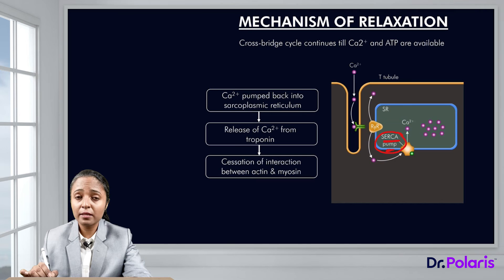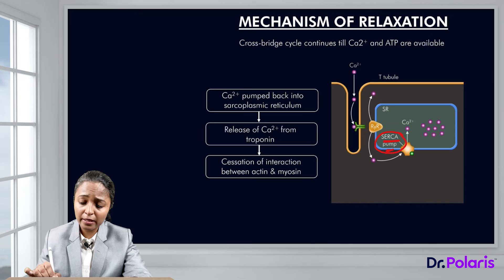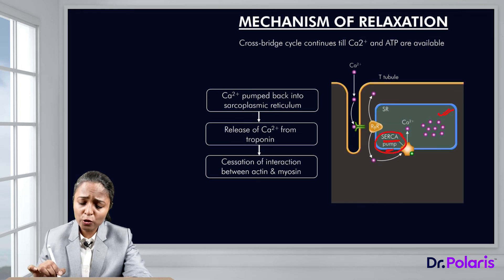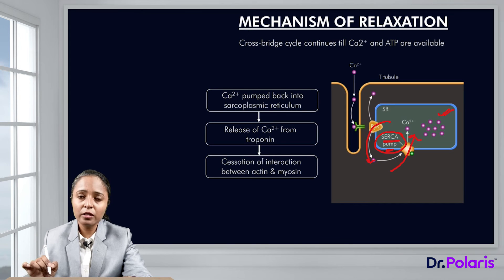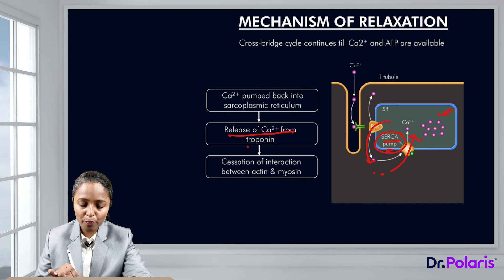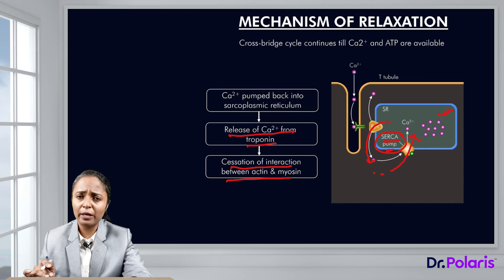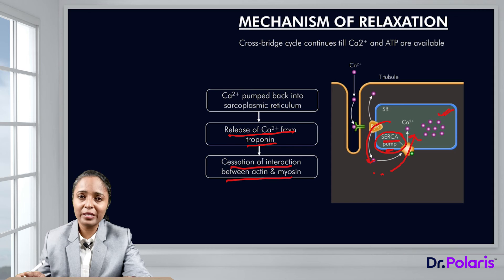The SERCA pump pumps calcium against the concentration gradient back into the sarcoplasmic reticulum, where calcium concentration is high. As soon as calcium is released by the ryanodine receptor, this pump becomes active, moving calcium back into the sarcoplasmic reticulum. This decreases calcium concentration in the sarcoplasm, releasing calcium from troponin and causing cessation of interaction between actin and myosin, stopping cross-bridge cycling.